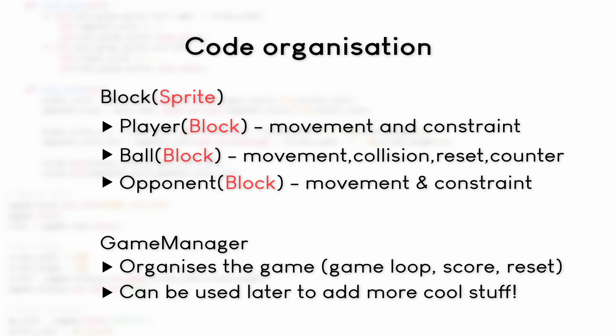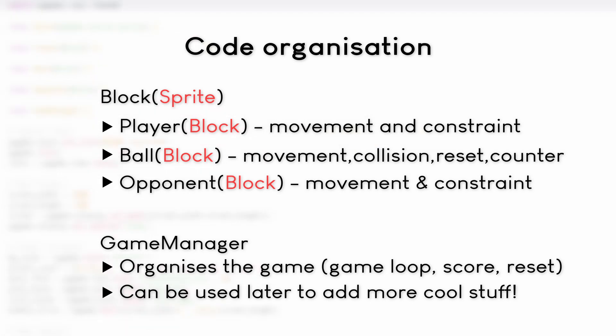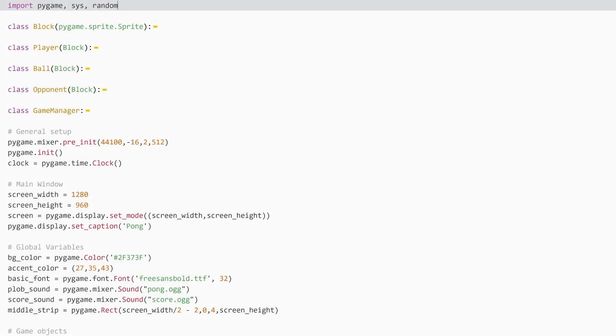I'm not going to go through the entire code line by line. Instead, I have already written the entire thing and I'm just going to go through each object and explain how it works, so that this tutorial isn't going to be an hour long. Right at the top we have the five different classes that organize our code, and for now I have hidden all of them, but I'm going to talk about them in just a second.